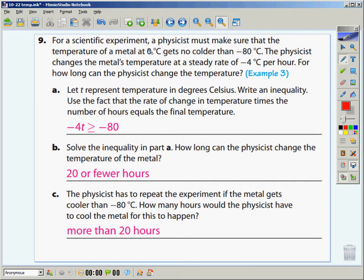Number nine. For a scientific experiment, a physicist must make sure that the temperature of a metal at zero degrees Celsius gets no colder than a negative 80. Can it be equal to a negative 80? Yes. Can it be less than a negative 80? No. It has to get greater. The physicist changes the metal temperature at a steady rate of negative 4 degrees per hour. So I'm taking a negative 4 times my amount of time. It has to be greater than or equal to a negative 80. If I divide both sides by a negative 4, it would tell me that T has to be less than or equal to, I have to flip that inequality, 20. That's how you find part B. You solve it. It tells me that it's got to be 20 hours or less.